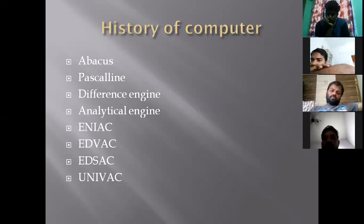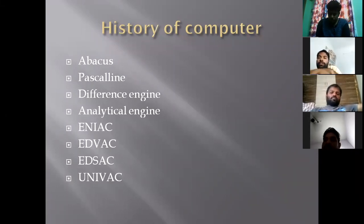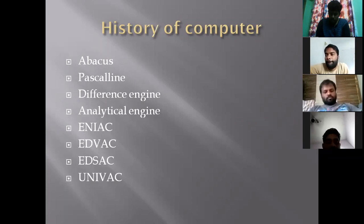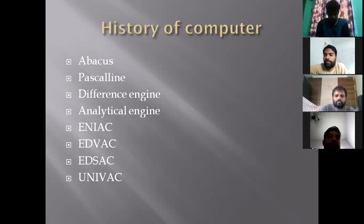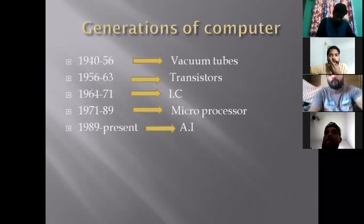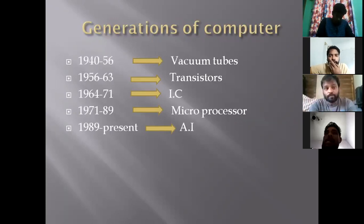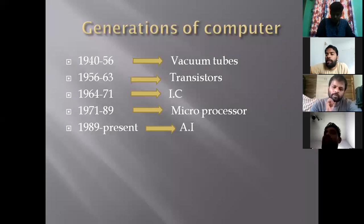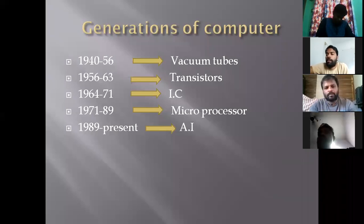The next one is UNIVAC — Universal Automatic Computer. This was the first commercial and general-purpose computer.